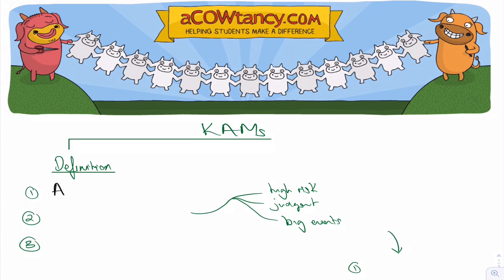It is something in our judgment, the auditor's judgment, that we think is the most significant item or items, key audit matters, out of all the things that we spoke about, that we communicated with those charged with governance, basically management.